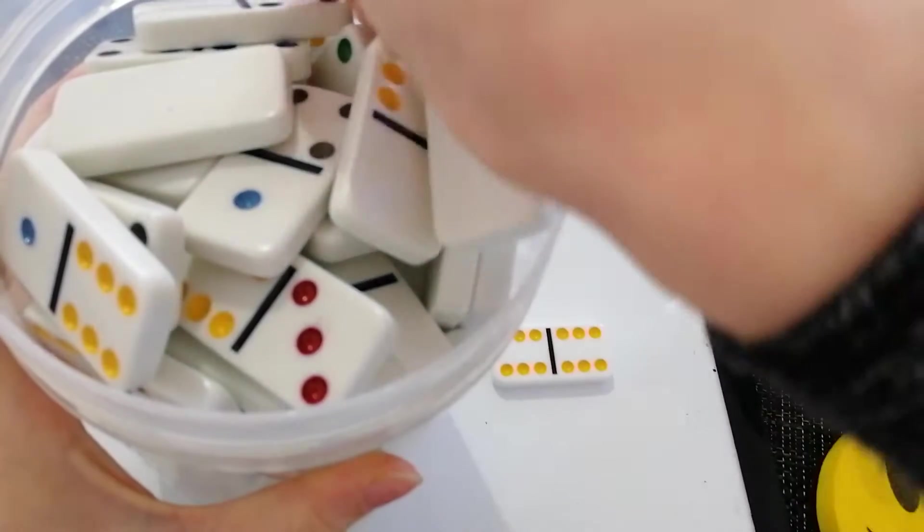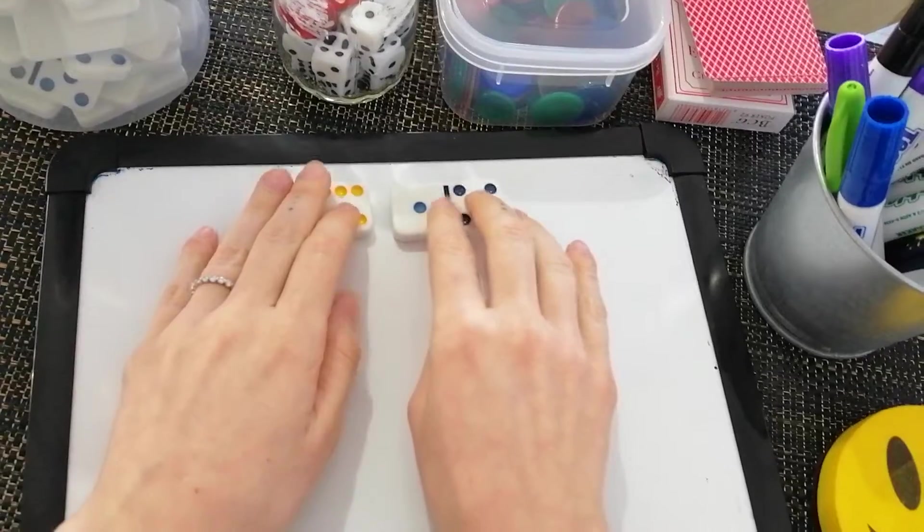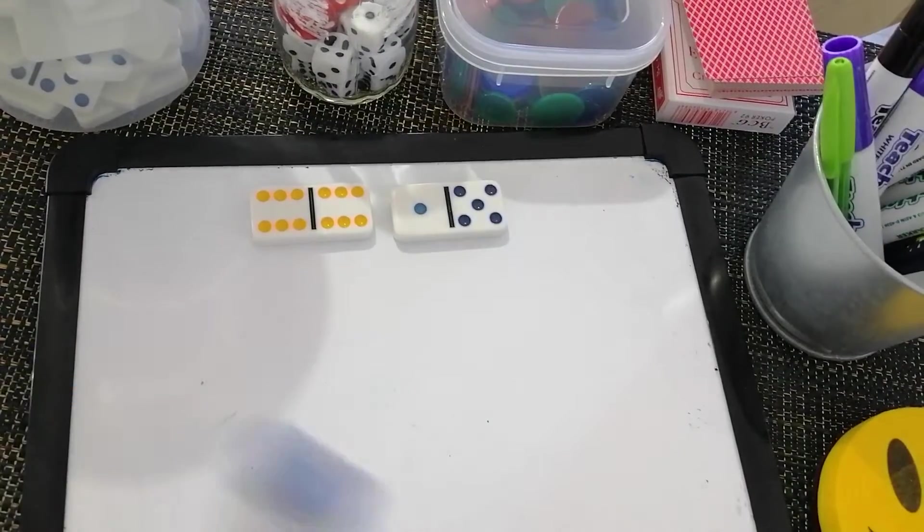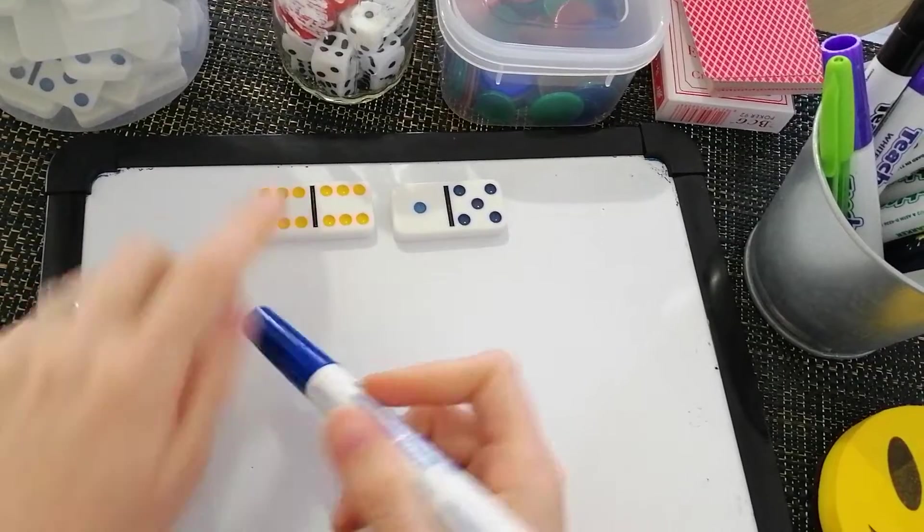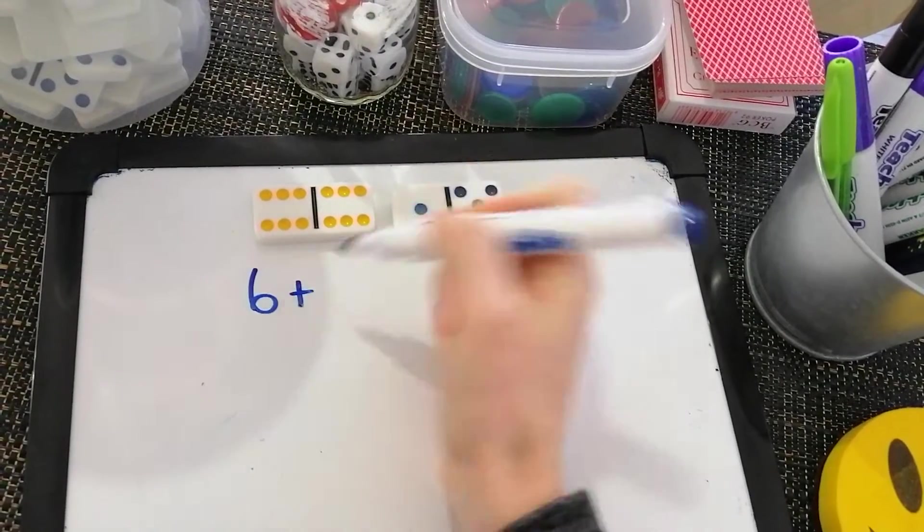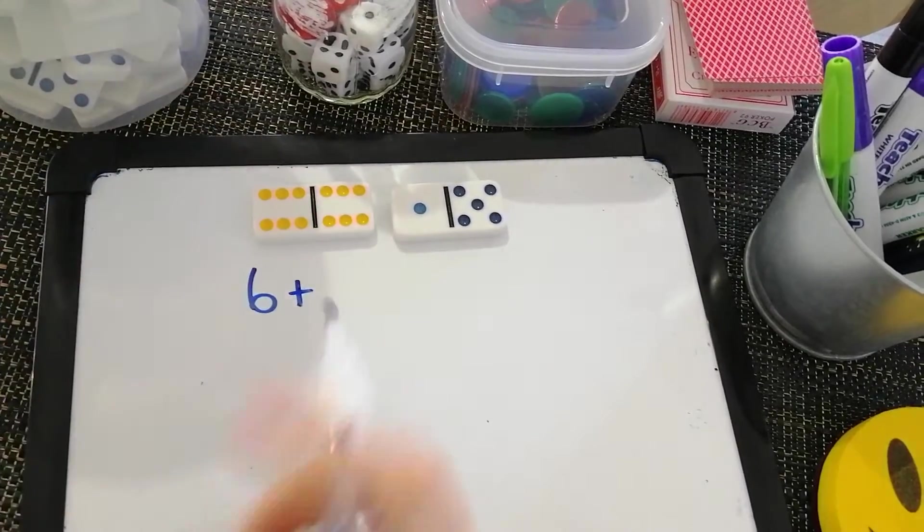So I'm going to pick one and two to start with. I'm going to line them up on my whiteboard and use my texter. I'm going to count how many dots. One, two, three, four, five, six. There's six on this side plus the other side. One, two, three, four, five, six on that side.